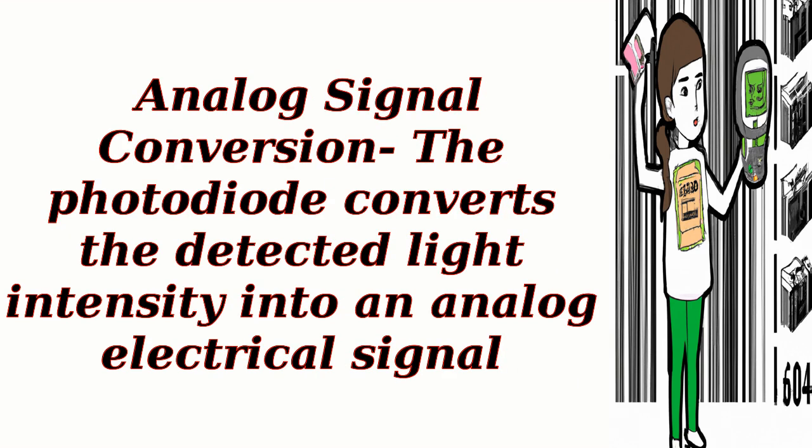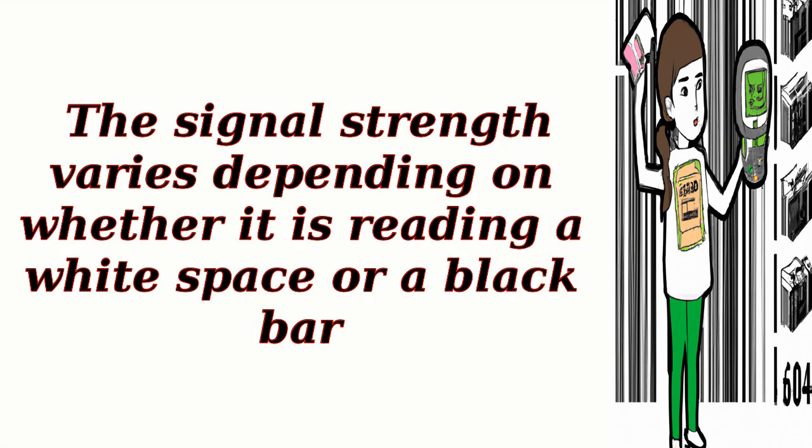Analog signal conversion: the photodiode converts the detected light intensity into an analog electrical signal. The signal strength varies depending on whether it is reading a white space or a black bar.